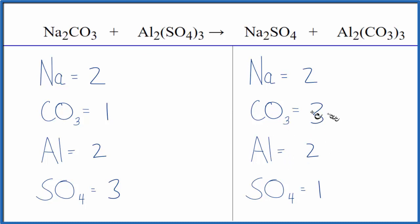So to balance it, we could start with the carbonates. We have one here and three here. So I could put a three as my coefficient in front of the sodium carbonate. I have two times three, that'll give me six sodium atoms, but the one carbonate times the three, so now I have three carbonates. Those are balanced.